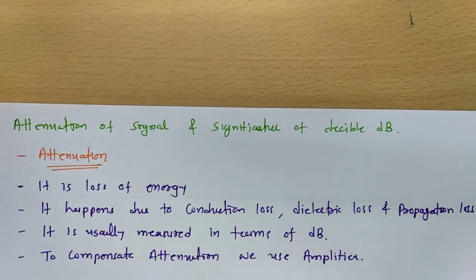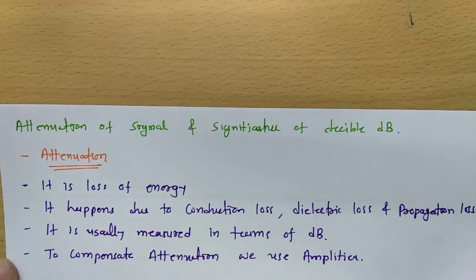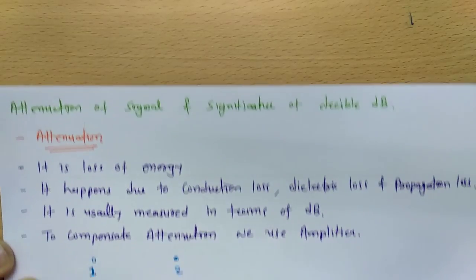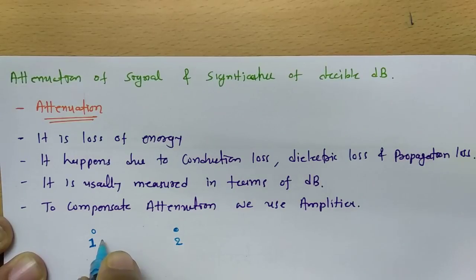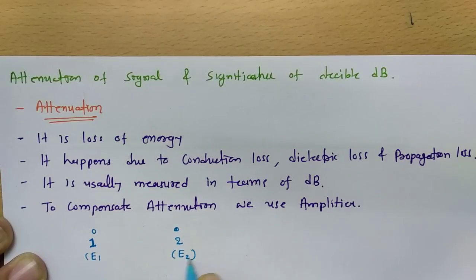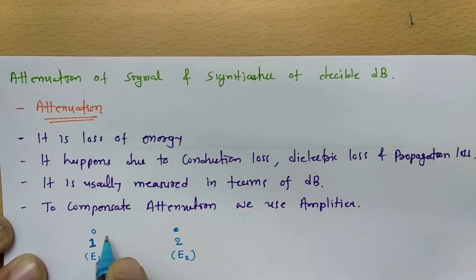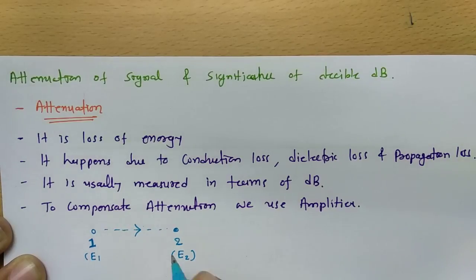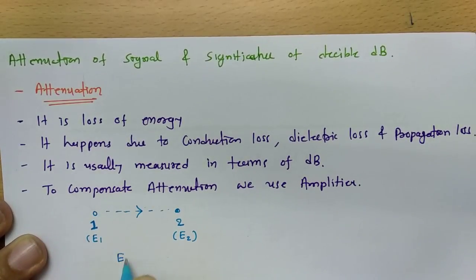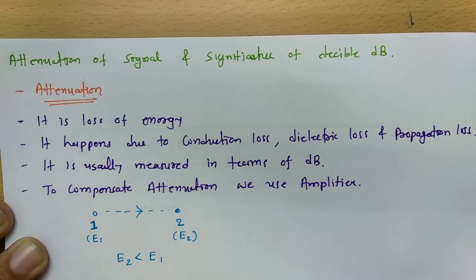When we talk about attenuation, if a signal is sent from point 1 to point 2, and at point 1 the energy is E1 and at point 2 the energy is E2, then as it propagates through the medium there will be a loss of energy. You will always find that E2 is less than E1, and that happens because of attenuation.